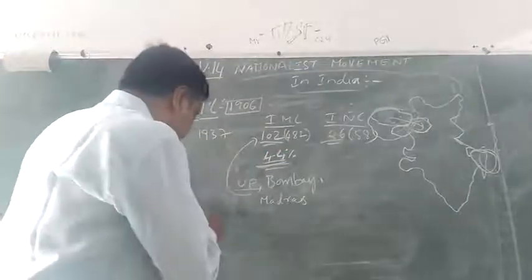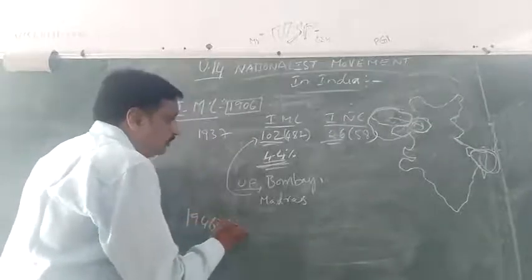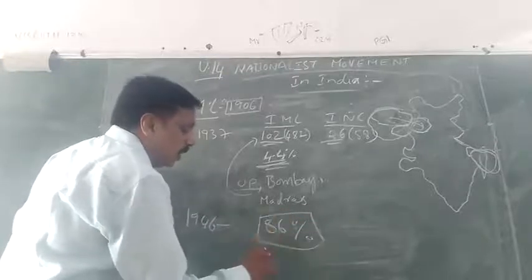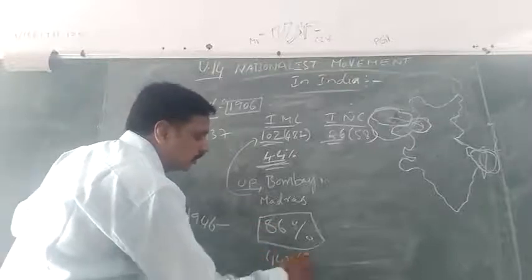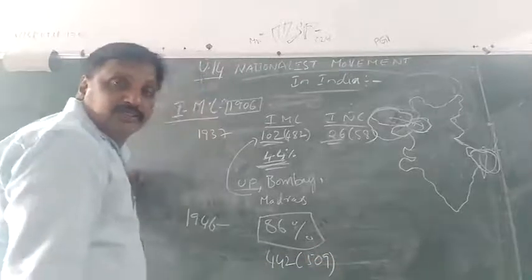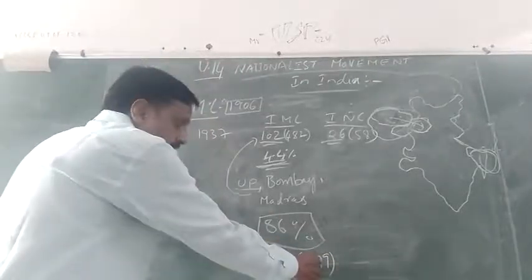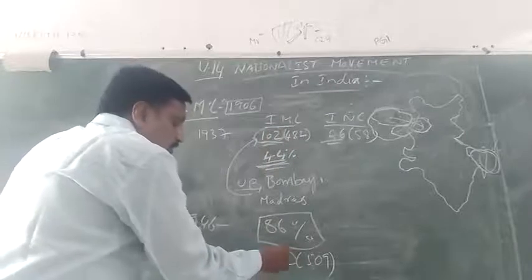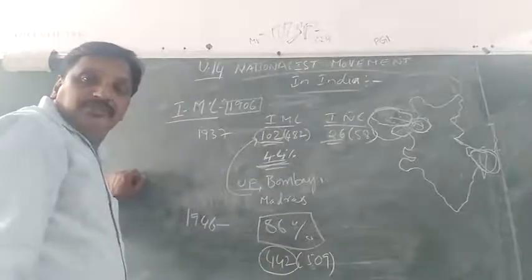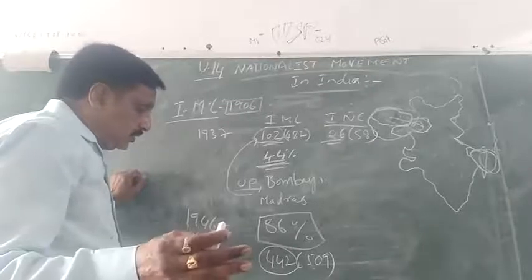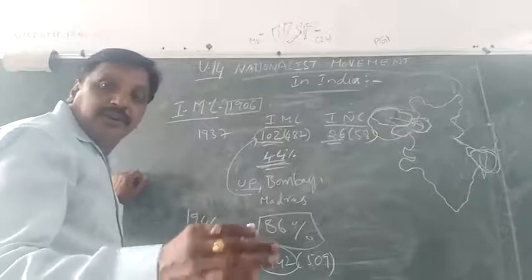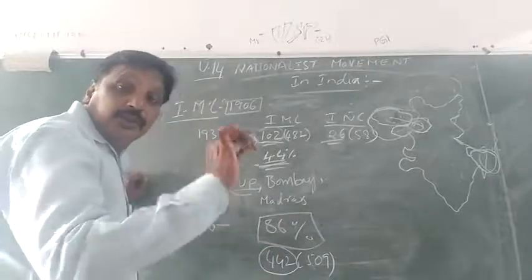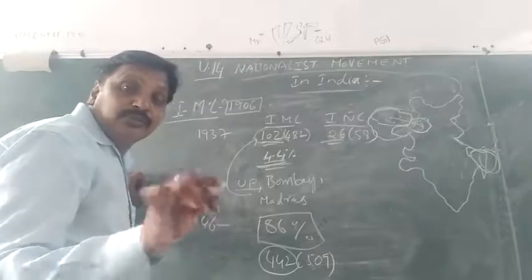The same Indian Muslim League, by 1946, got 86% of Muslim community votes and won approximately 442 seats out of 509 in the provincial assemblies. Almost 80% of seats reserved for Muslims were won by IML. So what made the minds of Muslims undergo such a change? Why did they rally behind the Muslim League, leaving the Indian National Congress or the Unionist Party, which was very strong in Punjab?